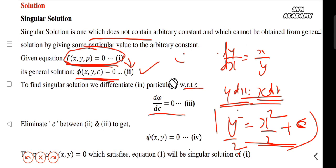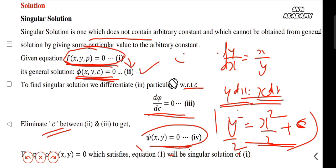We compare the general solution with the equation. C is involved. If C is involved, we eliminate C. This equation — we eliminate C from F of x, y, C and from its partial derivative with respect to C. If we satisfy this equation, we satisfy F of x, y, p equal to 0. This result is our singular solution. We use equation 2 and equation 3 to eliminate C.